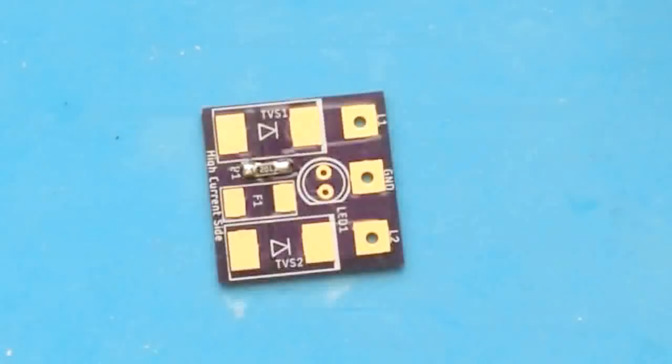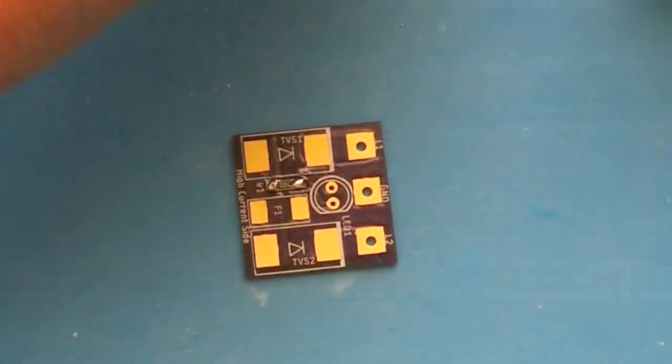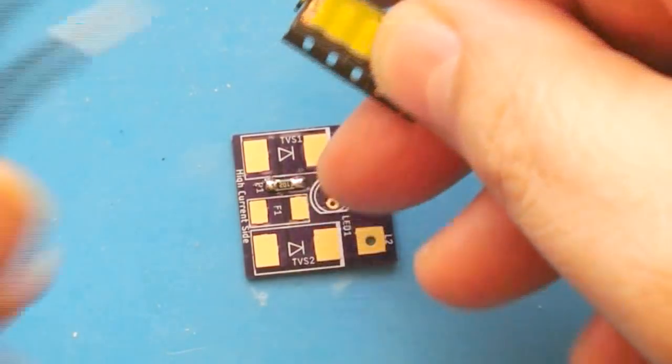We've got the current limiting resistor for the LED in place. Next up, I'm going to select a 2 amp fuse.